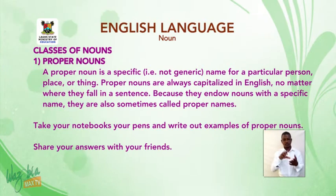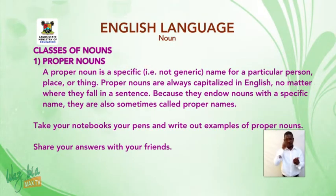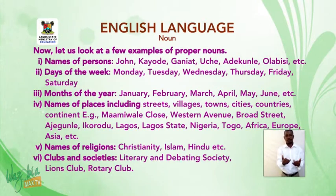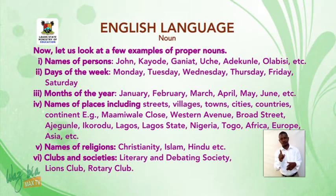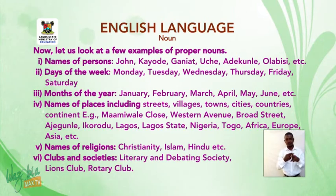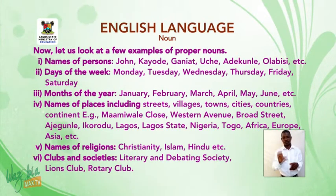Take your notebooks, your pens, and write out examples of proper nouns. Share your answers with your friends. Now, let us look at a few examples of proper nouns. One: names of persons — John, Coyote, Ganiat, Uche, Adekunle, Olabisi, etc. Days of the week: Monday, Tuesday, Wednesday, Thursday, Friday, Saturday.